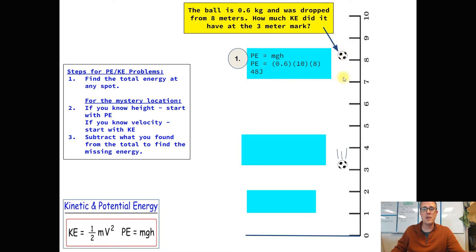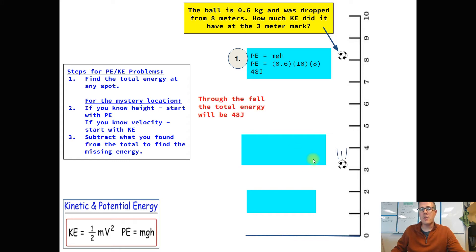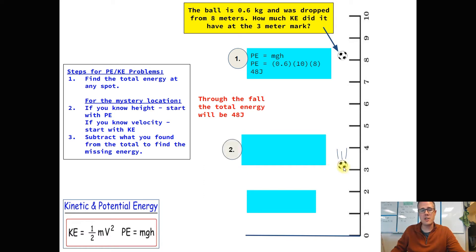It's all in the form of potential at the top, and as it's dropped, some of that starts turning into kinetic. Down at the 3-meter mark, the total still has to be 48 joules — just a combination of potential and kinetic. Since we know the height at that spot, we can figure out how much energy is still potential. We know the height and the mass, so we can calculate the potential energy there too, and whatever is left over has to be the kinetic energy it turned into.